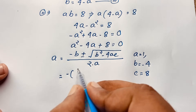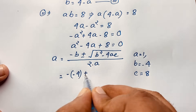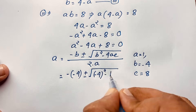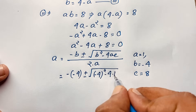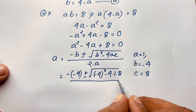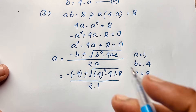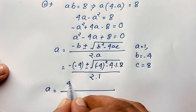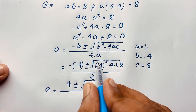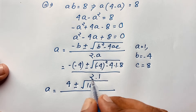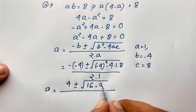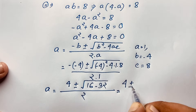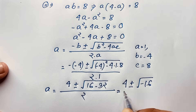Now, minus b — b is negative 4 — so we get positive 4 plus or minus square root of (negative 4) whole squared minus 4 times 1 times 8, over 2 times 1. That gives us 4 plus or minus square root of 16 minus 32 over 2, which is 4 plus or minus square root of negative 16 over 2.